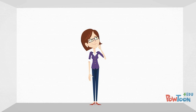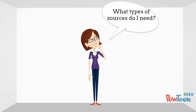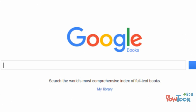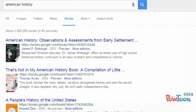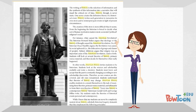It can also be helpful to think about the type of information source that will work best for you and to use Google options for finding those specific types of sources. For example, if you are searching for a book, you may want to try Google Books. Although you will not usually be able to read the entire book online, except for some older books, using Google Books will often allow you to view a preview of the book that can help you determine if that book will be helpful for your research.